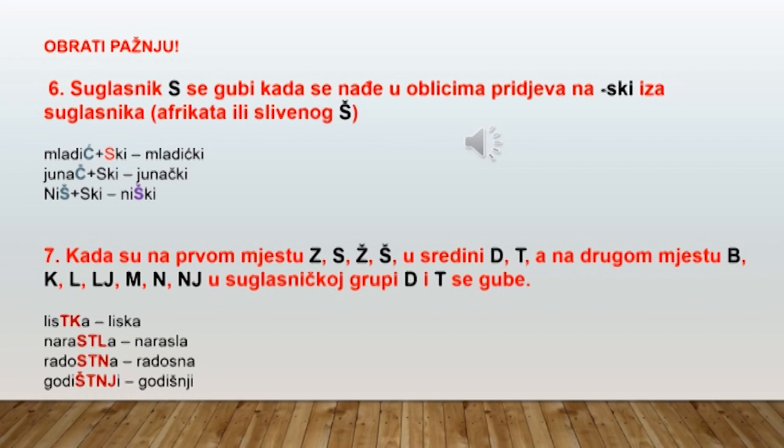a na drugom mjestu suglasnici B, K, L, M, N u suglasničkoj grupi, D i T se gube. Na taj način su nastale sljedeće riječi: liska, narasla, radosna, godišnji.